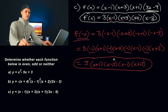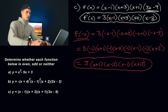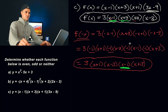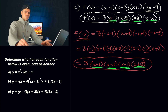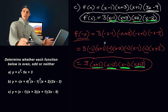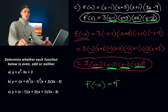So f of negative x simplifies to three times x plus one times x minus three times x minus one times x plus three. And if you look carefully, this function and the original f of x are actually the same — we have three out front in both, and all the same factors appear: x minus one, x plus one, x plus three, x minus three. So f of negative x equals f of x, and therefore this function is even.